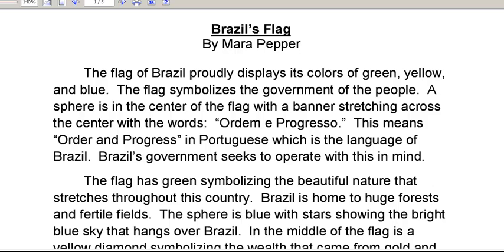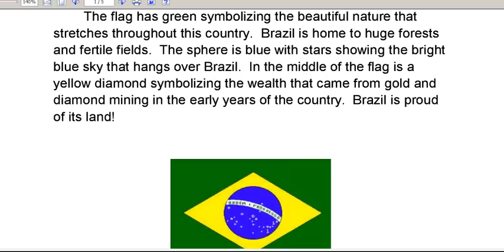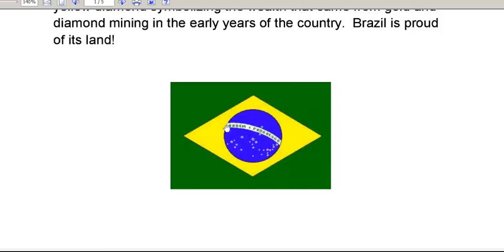The students' writing that we will be looking at today — these children were provided with two sources. The first one was titled Brazil's Flag. The flag of Brazil proudly displays its colors of green, yellow, and blue. The flag symbolizes the government of the people. A sphere is in the center of the flag, with a banner stretching across the center with the words Ordem e Progresso. This means order and progress in Portuguese, which is the language of Brazil. Brazil's government seeks to operate with this in mind. The flag has green, symbolizing the beautiful nature that stretches throughout this country. Brazil is home to huge forests and fertile fields. The sphere is blue with stars, showing the bright blue sky that hangs over Brazil. In the middle of the flag is a yellow diamond, symbolizing the wealth that came from gold and diamond mining in the early years of the country. Brazil is proud of its land. Notice you can see the parts of the flag: the green, the yellow, the blue, the banner, and the stars.